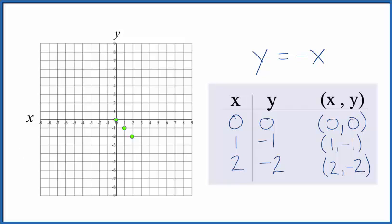There's 3 points. Let's put a line through that. And then arrows to show that that goes to infinity. And that's the line for y equals negative x.